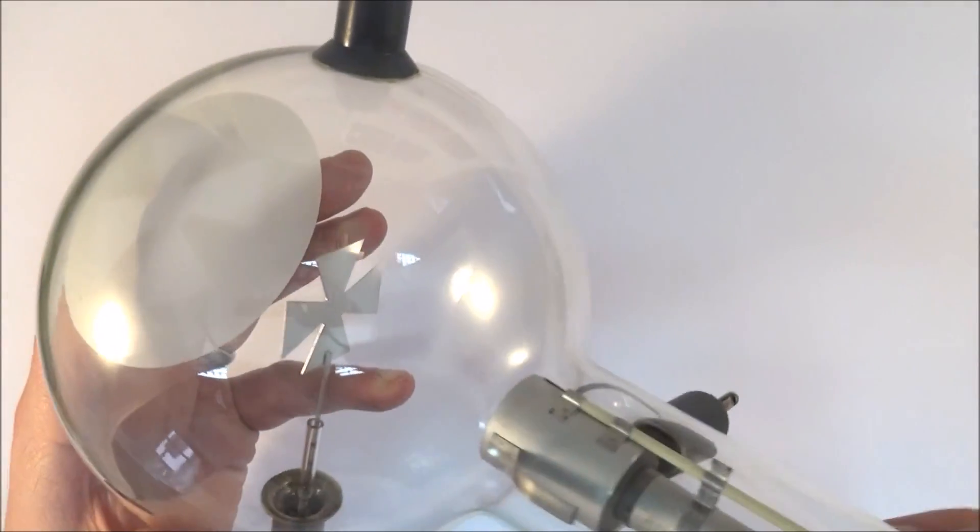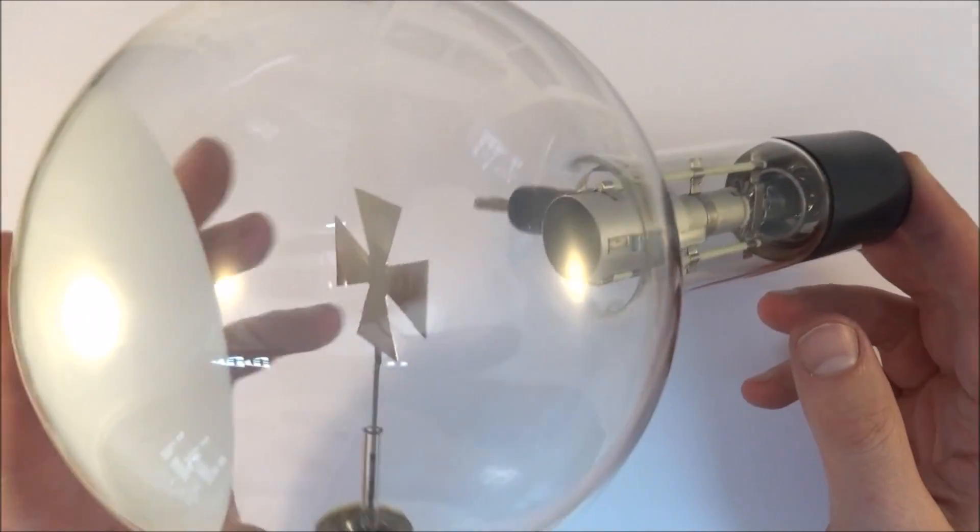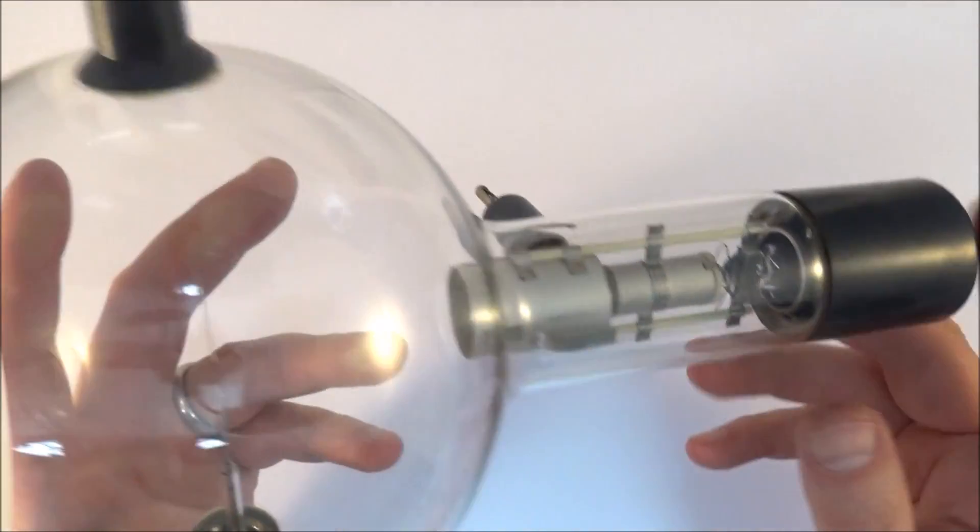In this video I'd like to look at some of these tubes. The first one I'm going to look at is called the Maltese cross and a lot of these you might have seen in your physics classrooms.